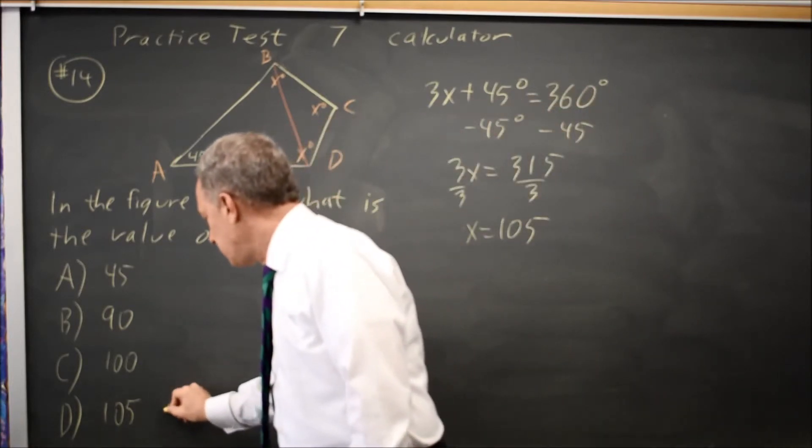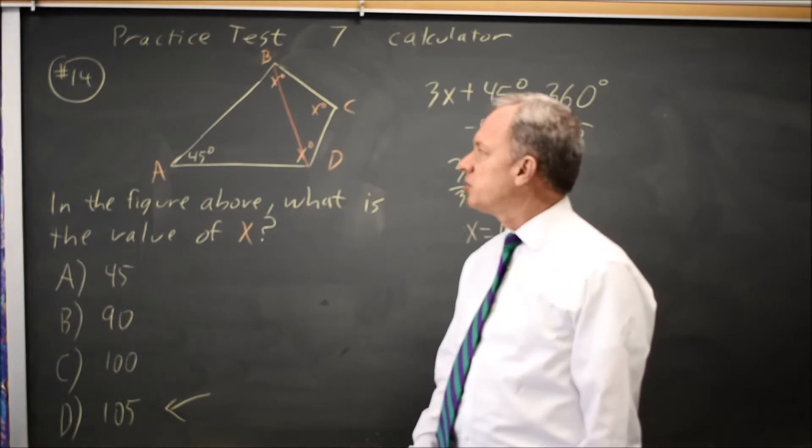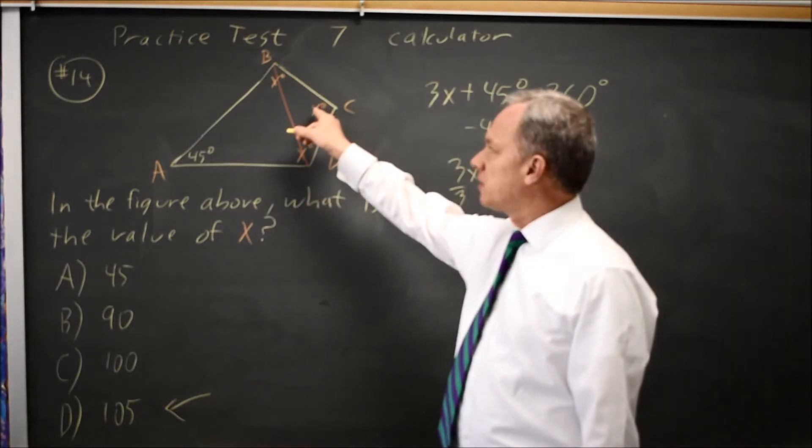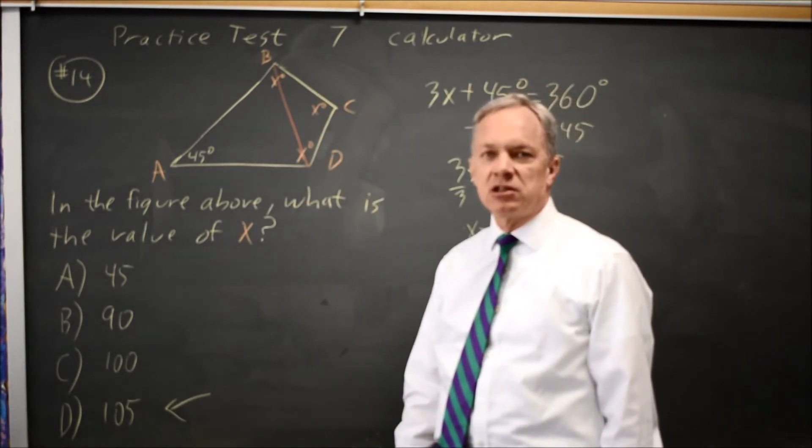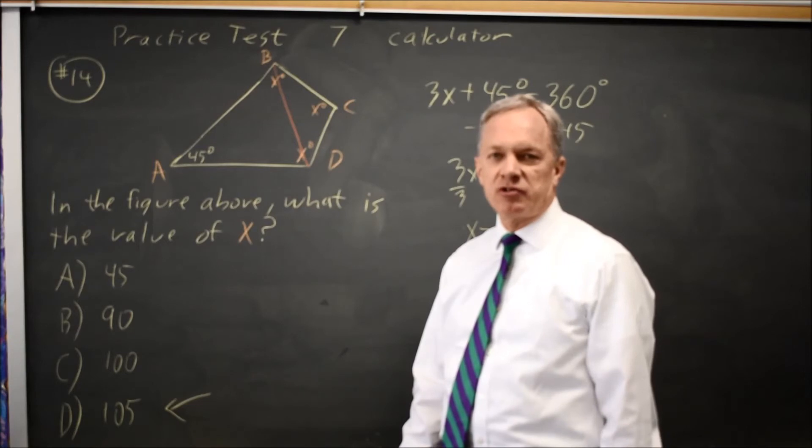That would be choice D. If you're unsure, estimation works. Since this is supposed to be to scale and angle x is clearly larger than 90 degrees, at least in their diagram, choices A and B are wrong. That gives you a 50-50 chance.